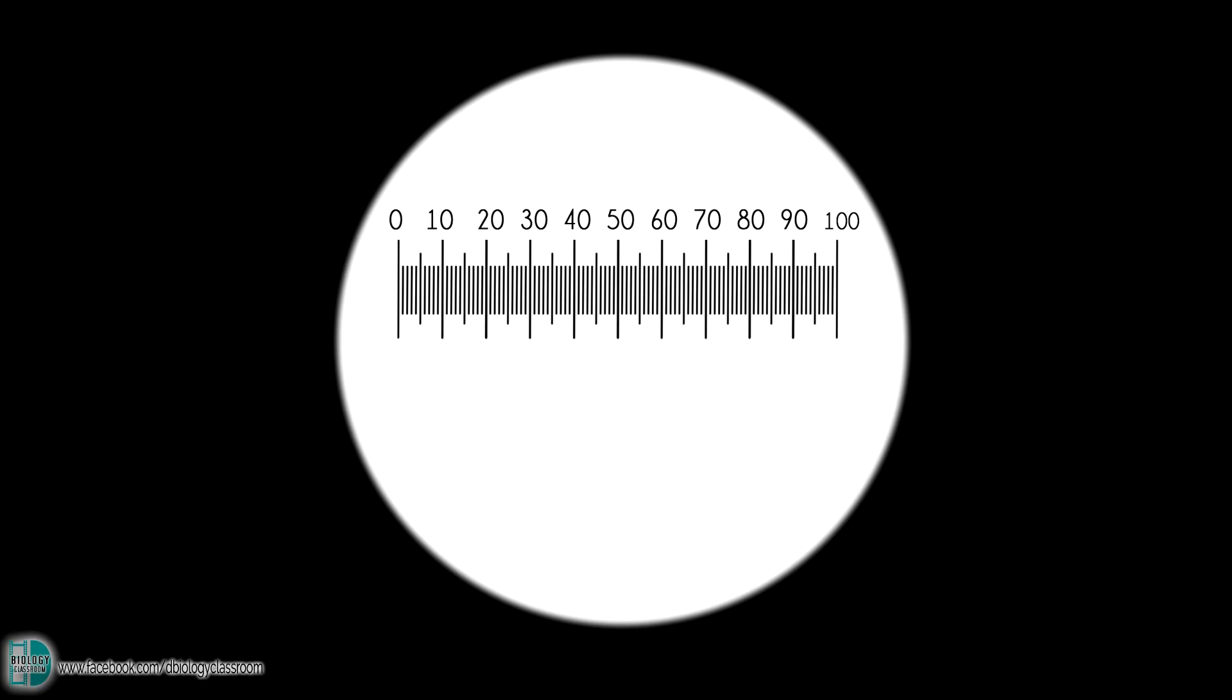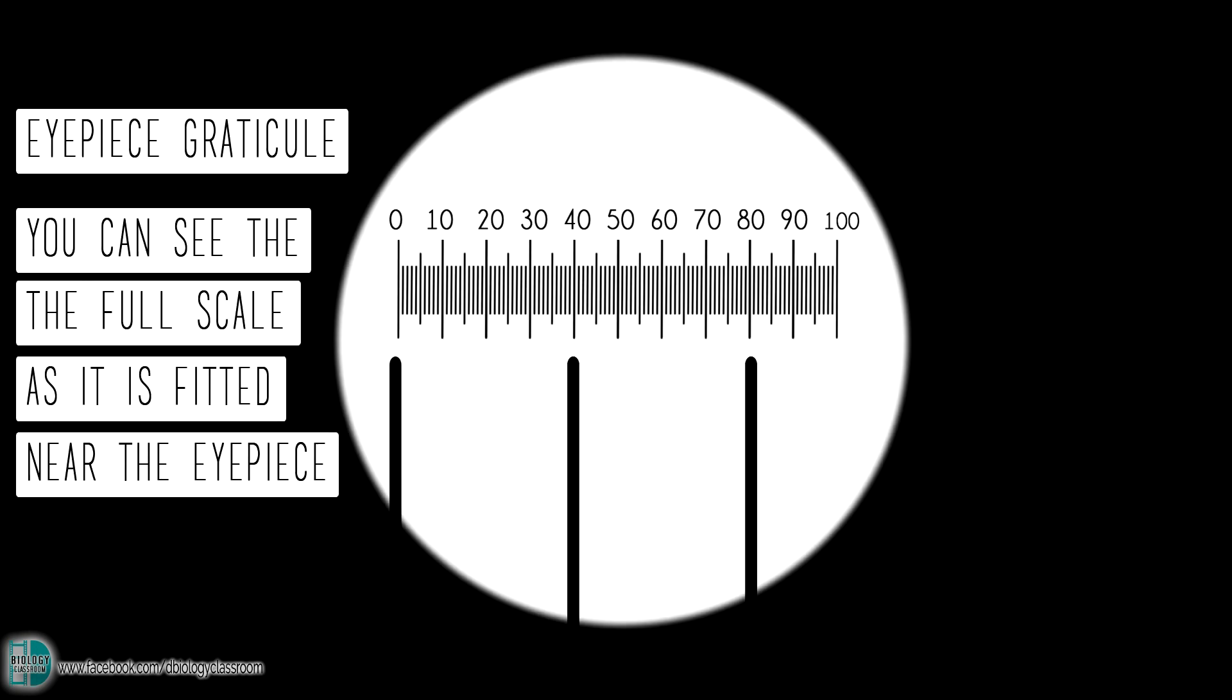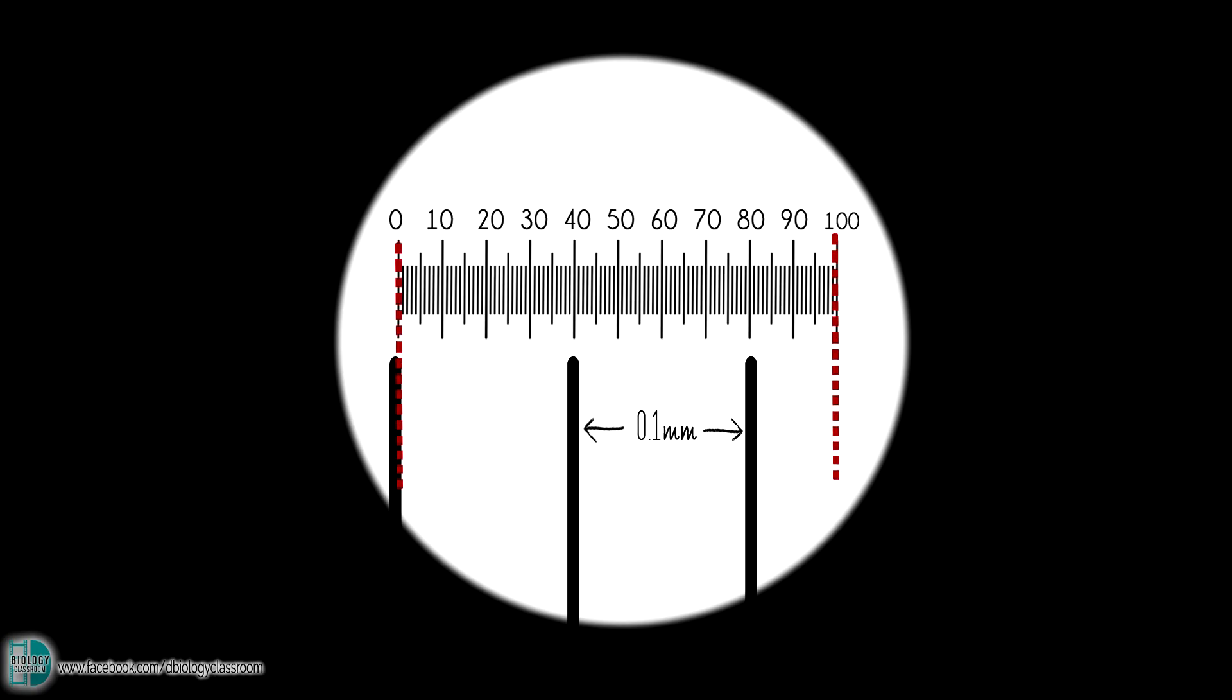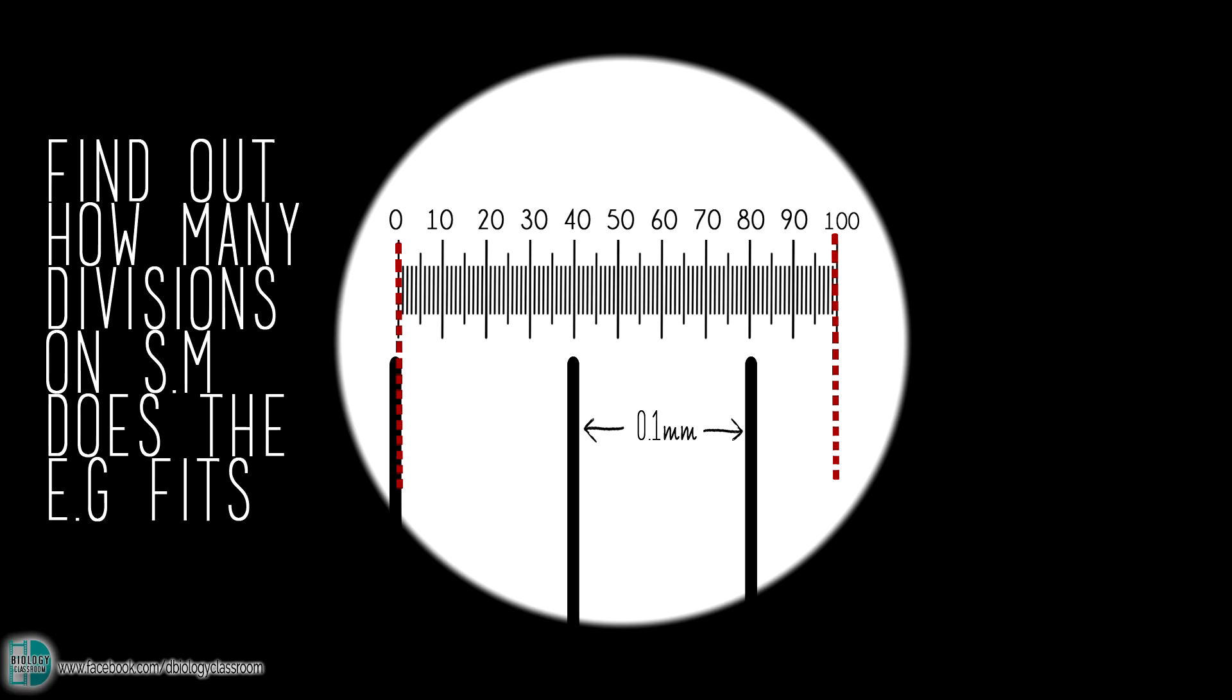This is how an eyepiece graticule should look like. You can see its full scale because it is fitted at the eyepiece. It normally has 100 divisions. When you view a stage micrometer, you can only see part of it because it has been magnified. The stage micrometer we use usually have a smaller division of 0.1mm. Align both of them and find out how many divisions on the stage micrometer does the eyepiece graticule fit into.